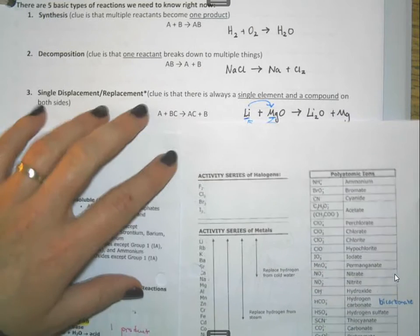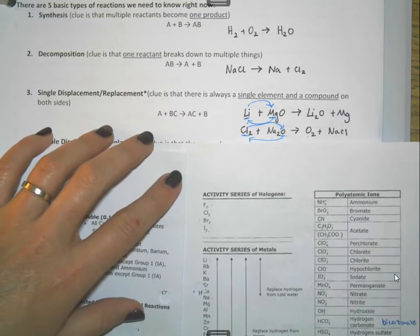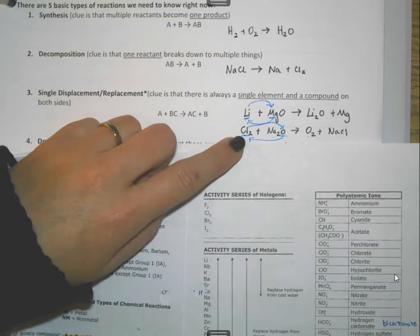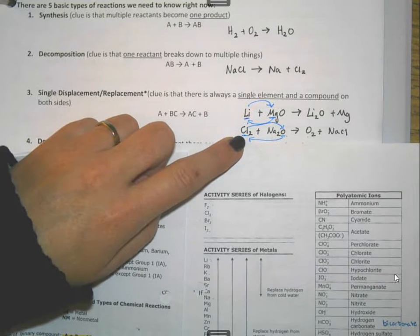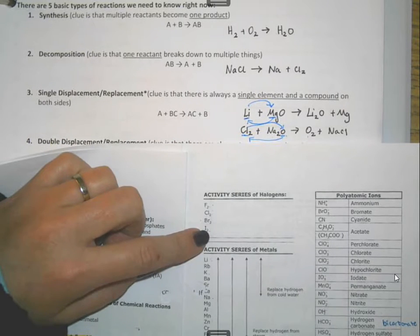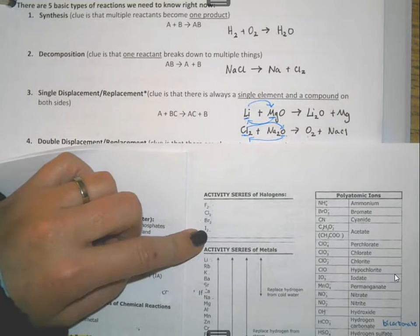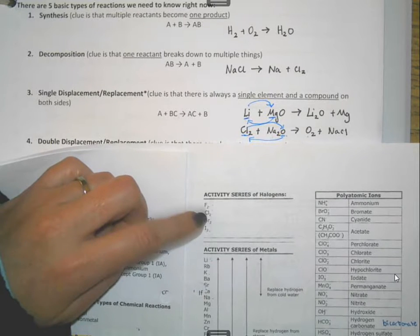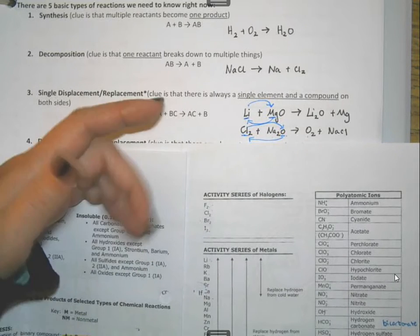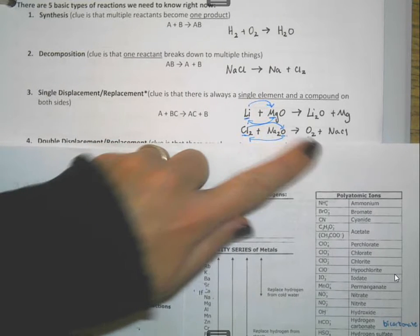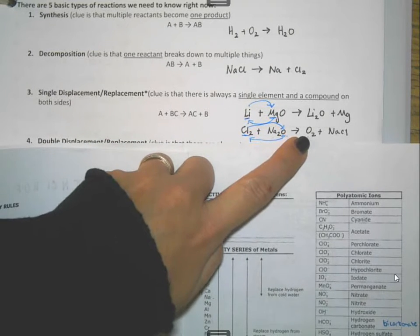We do the same exact thing with the non-metals, except you just have to look up here at the halogens. For example, with this one, chlorine is out by itself. Oxygen is with the Na. Well, the halogens are more reactive. They are less stable than anything else. Oxygen isn't on this list, and since chlorine is, that means chlorine is going to get to go with the sodium. So chlorine will step in and switch places, making sodium chloride, and oxygen will get booted out by itself.